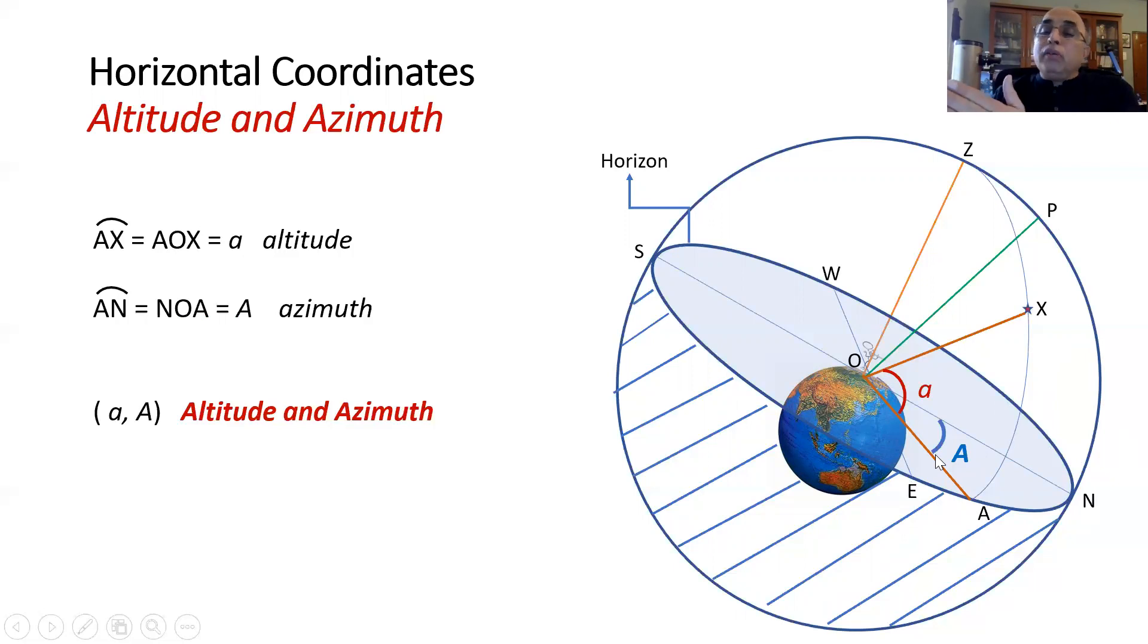You measure it eastwards all the way 360 degrees. There are some people who measure you say 30 degrees azimuth east, 30 degrees azimuth west, or you have 0 to 360 degrees measured conventionally in the east direction. Using this altitude and azimuth we can give location of this point uniquely. Any point in the sky can be uniquely determined by altitude and azimuth. This is called the horizontal coordinate system.